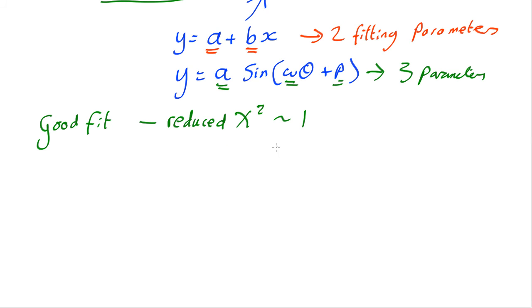If reduced chi-squared is greater than one, that tells you it could be improved.